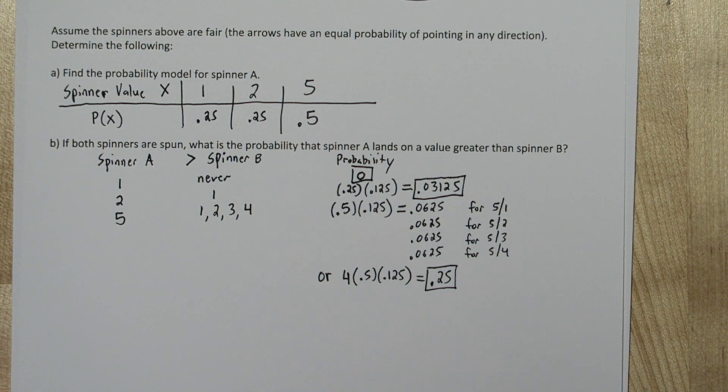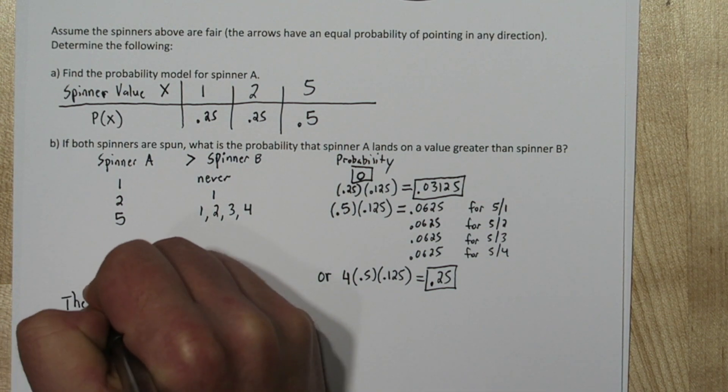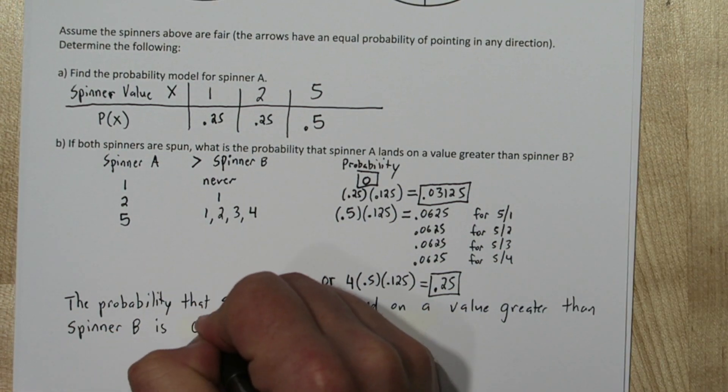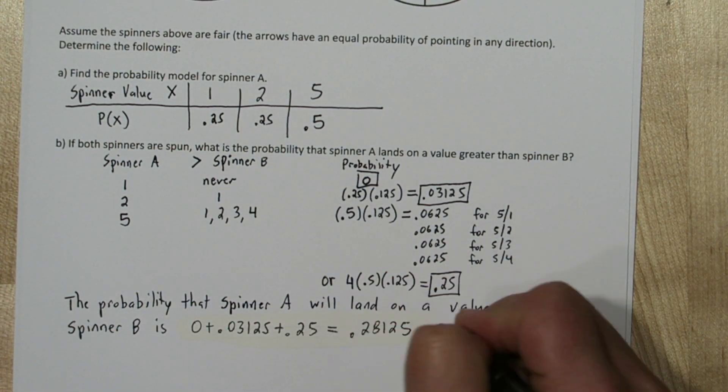And finally, our 0.25 probability is the probability spinner A lands on a 5 and is greater than spinner B, which happens if spinner B lands on a 1, 2, 3, or 4. So if we add these three probabilities up, we have our total probability that spinner A lands on a value greater than spinner B.